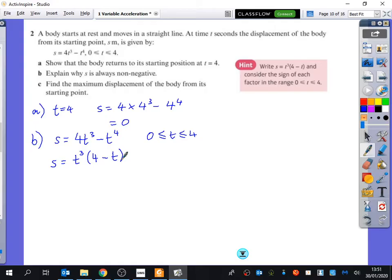So here, because we know that t is between 0 and 4, what do we know about t cubed? What kind of number is it? Good. Because t is between 0 and 4, t cubed is positive.